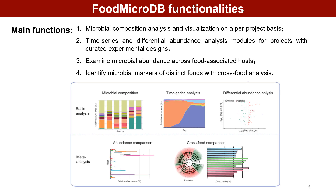FoodMicroDB provides four main functions: 1. Microbial composition analysis and visualization on a per-project basis; 2. Time series and differential abundance analysis modules for projects with curated experimental designs; 3. Examine microbial abundance across food-associated hosts; 4. Identify microbial markers of distinct foods with cross-food analysis.